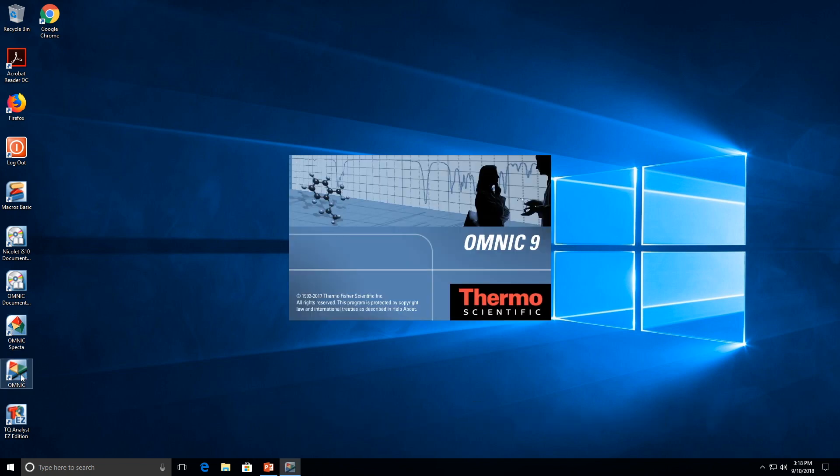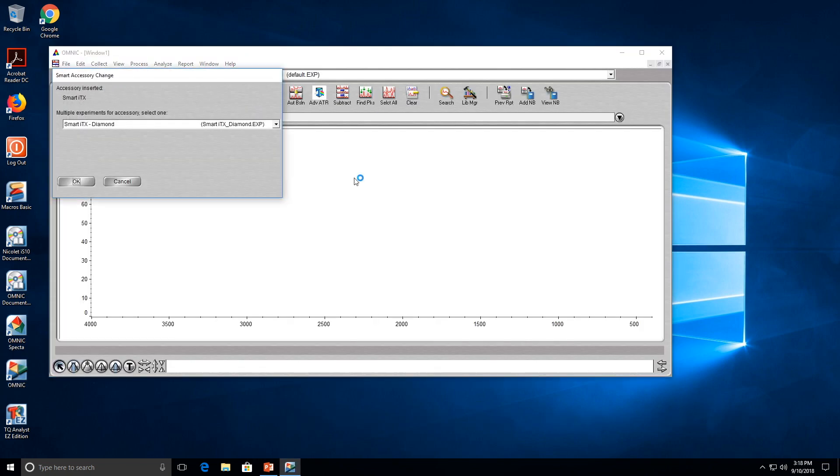Before taking the background scan we have to open the Omnic software on the computer. Once it's open, make sure that the correct attachment is chosen. In our case that's the smart diamond attachment.